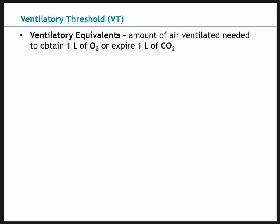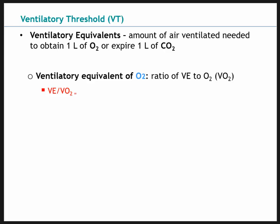Moving on to ventilatory threshold. First, what are ventilatory equivalents? This is the amount of air we have to ventilate to obtain one liter of oxygen or to expire one liter of CO2. Air is not 100% oxygen — it's mostly nitrogen with a smaller percentage of oxygen and a very small percent of CO2. So we have to ventilate more air to obtain a certain amount of oxygen.